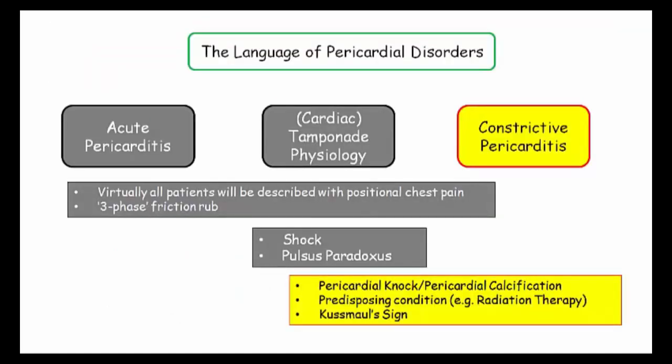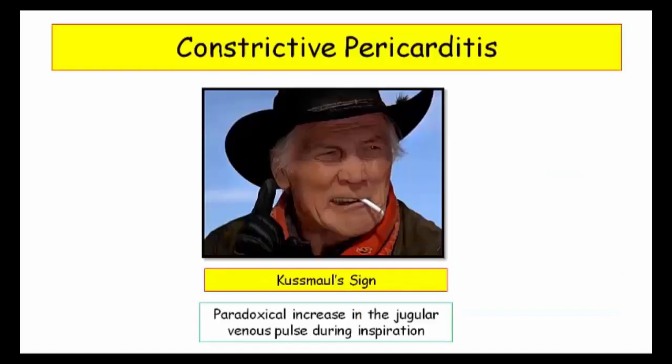We'll finish our review of pericardial disorders with a discussion of constrictive pericarditis. This disorder is fairly straightforward with a couple of key distinguishing features. If you understand just one thing about constrictive pericarditis, let it be the physiologic basis for Kussmaul's sign — if you understand this, you understand the disorder and the associated derivatives.